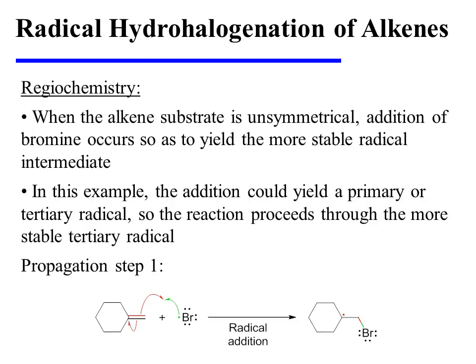When the alkene substrate is unsymmetrical, addition of bromine occurs so as to yield the more stable radical intermediate. In this specific example, we'll consider the radical hydrohalogenation of this unsymmetrical alkene substrate. In propagation step one, bromine radical adds to the alkene pi bond, and can ultimately yield a primary radical or a tertiary radical. The tertiary radical is more stable, so the bromine atom adds to the terminal carbon of the alkene substrate.